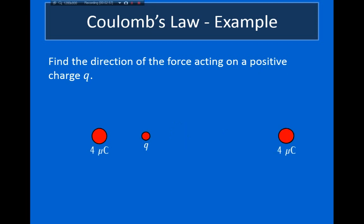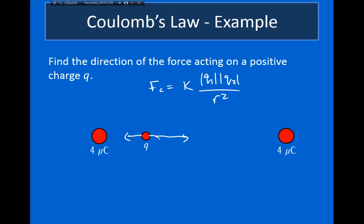In the second example, all particles are positively charged, so both outer particles repel the center particle in opposite directions. Since the Coulomb force equals KQ₁Q₂ divided by distance squared, the center particle is closer to the charge on the left, so that repulsive force is greater. As a result, the net force on the center particle points to the right.